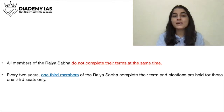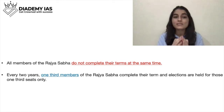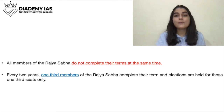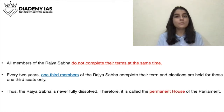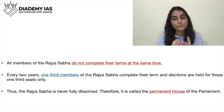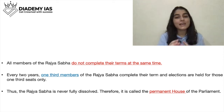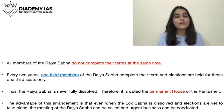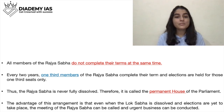All the members of Rajya Sabha do not complete their terms at the same time. Every two years, one-third members of Rajya Sabha complete their term and elections are held for those one-third seats only. Thus, the Rajya Sabha is never fully dissolved, and therefore it is called the permanent house of Parliament. This is a direct statement asked many times in exams.